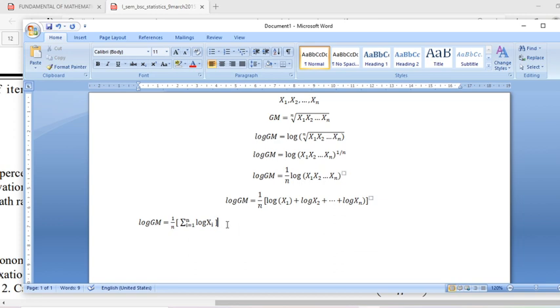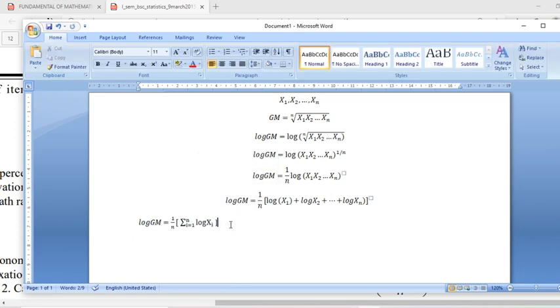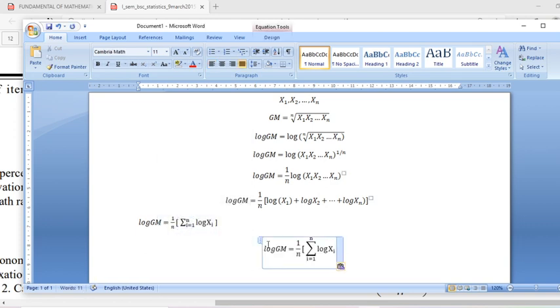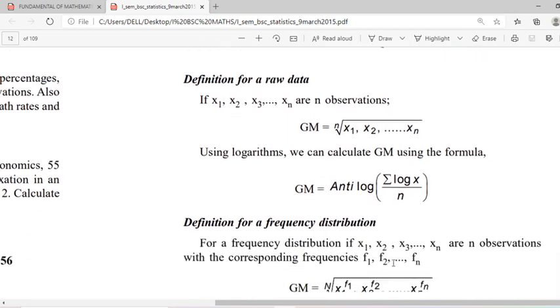Log of GM. So what will be GM? From this equation we can find out GM is equal to antilog of this quantity.